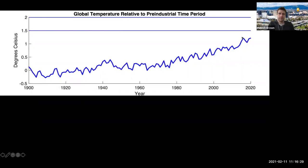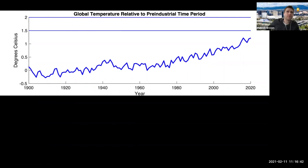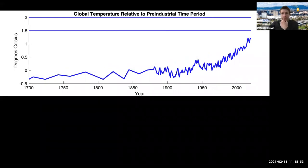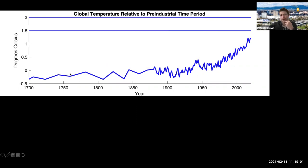Zooming out a little bit more, this is back to 1900. We can see the same wiggles. This more or less encompasses the instrumental climate record — when we actually had thermometers on the surface of the planet measuring global average temperature. Zooming out further, we lose our high time resolution going back further because this is now evidence put together from tree rings, pollen cores, ice cores, and things like that. We lose that resolution, but presumably there were still ups and downs every year.